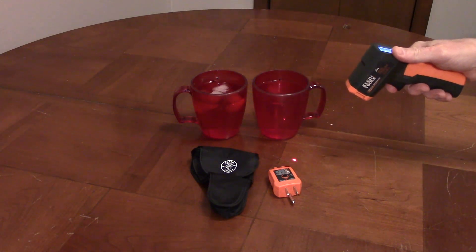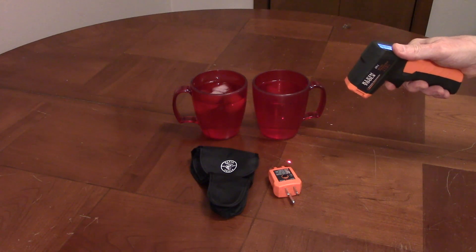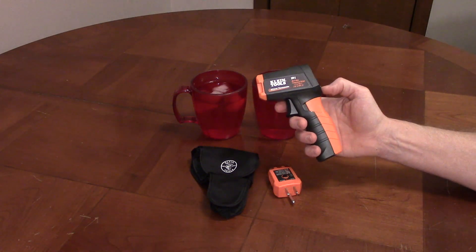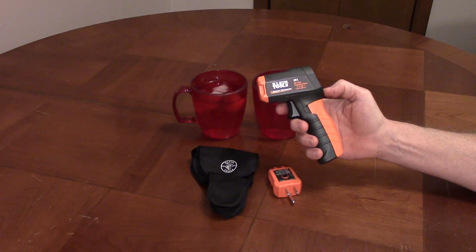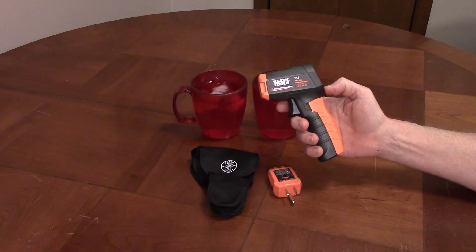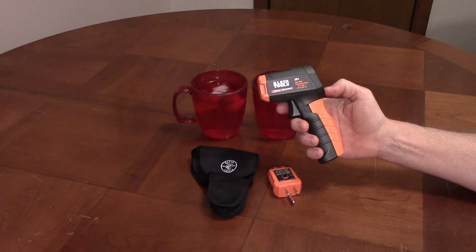The targeting laser shows the center of the test area. If you're 10 inches away from the surface you're measuring, the area measured is 1 inch in diameter. If you're 20 inches away, the area that's measured is 2 inches in diameter.